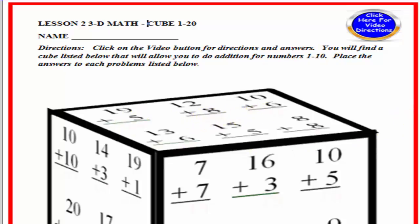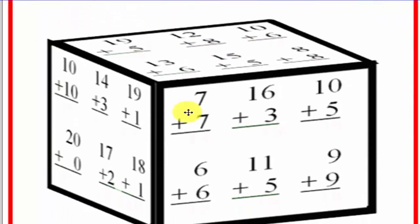You'll notice that we have a cube with 1, 2, 3 sides. What we'd like for you to do is to add up the numbers and place the answer in the correct spot. To illustrate what we're talking about, let's look at the first one. Here we have 19 plus 5. 19 plus 5 is equal to 24.